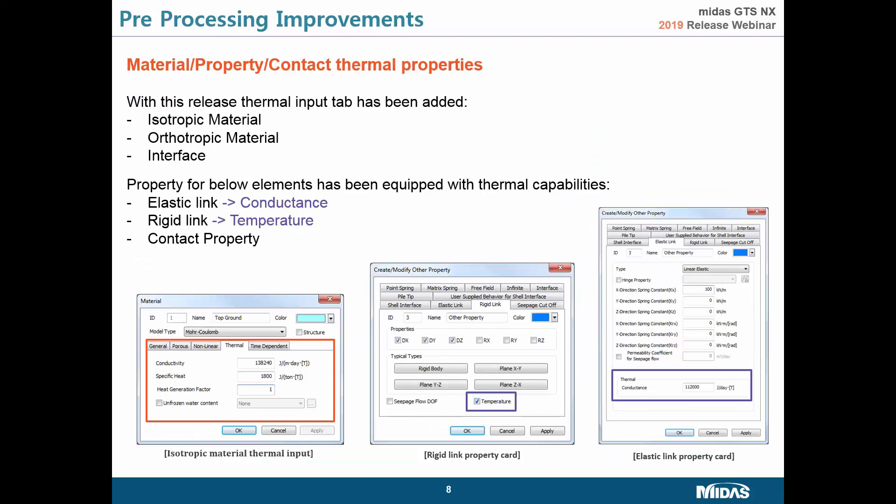With the new thermal analysis types, all material cards have been updated. Isotropic materials, orthotropic materials, and interface materials all get a thermal tab with the relevant parameters.